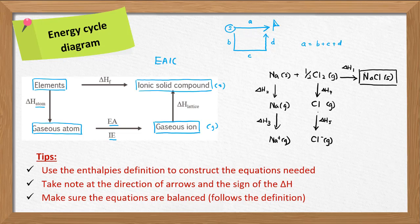The last step is the lattice energy, which relates between the gaseous state and the solid state — it can happen in either direction. According to one definition: when one mole of the solid ionic compound is formed from its gaseous ions. We label this as the sixth enthalpy, going from gaseous state into solid state. This is bond formation and it releases energy, therefore this will be a negative value.